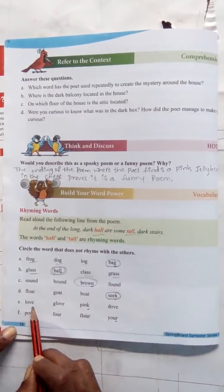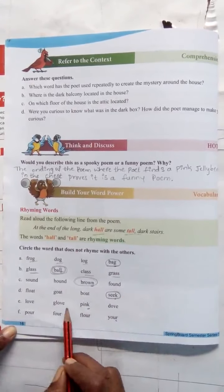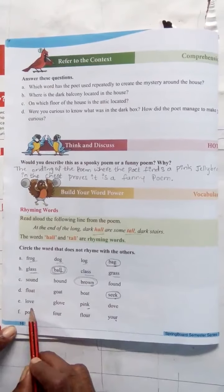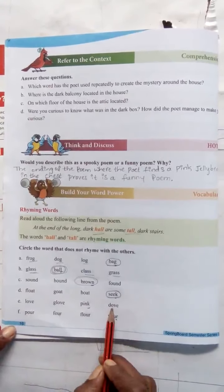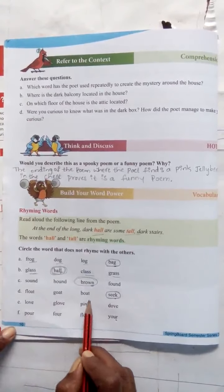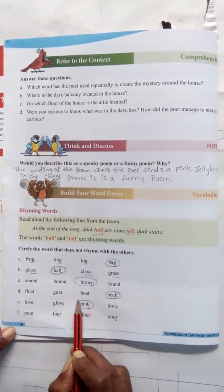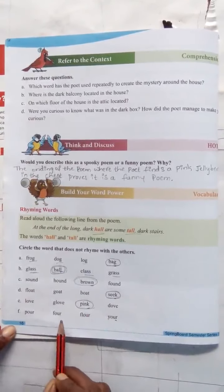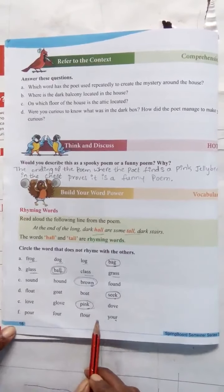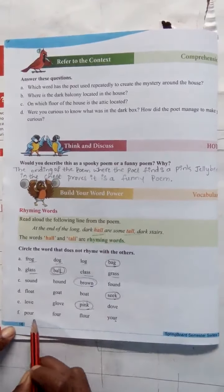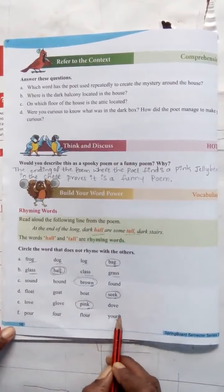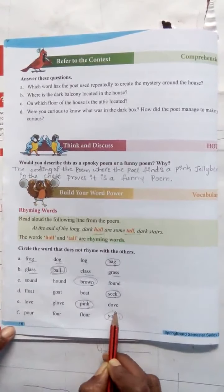E: love, glow, pink, dough. Love, glow, dough are the same — pink is different. F: pour, pour, floor, floor, 'ure' — the '-ure' ending is different from the others. So circle 'ure.'